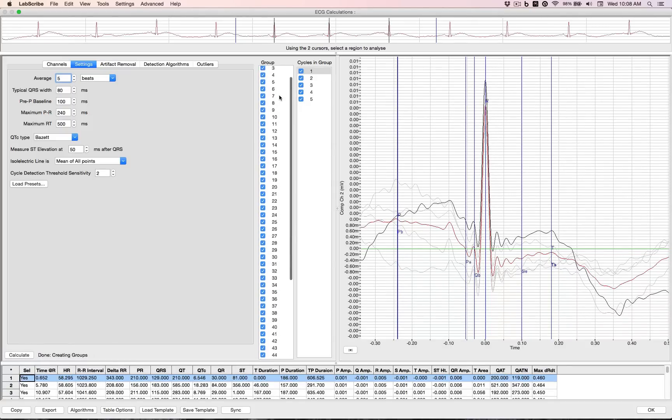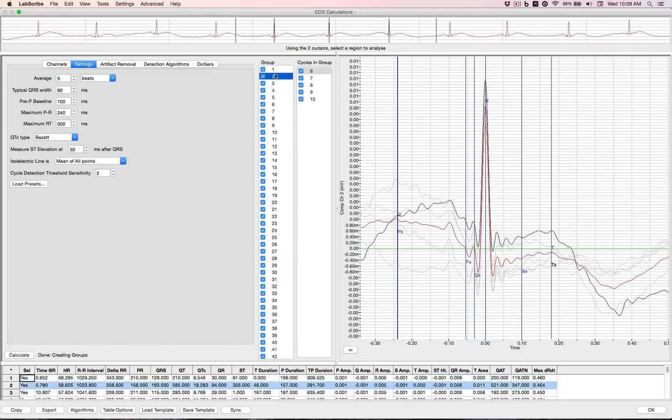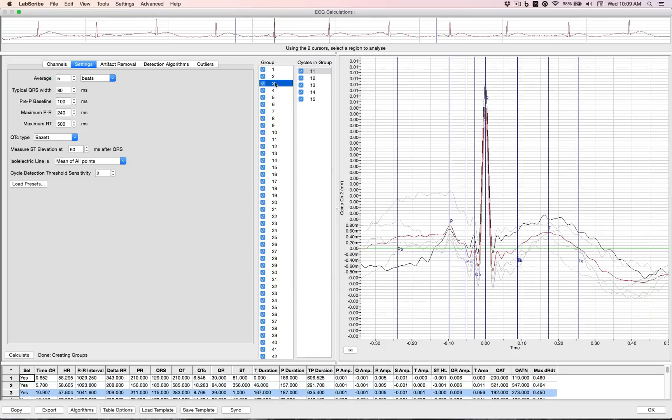And now it is broken down into the various groups and the cycles in each group, allowing us to go through each section of the trace and remove any outliers.